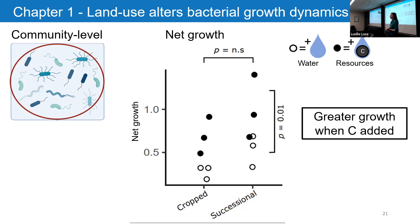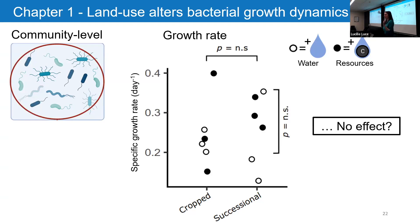I also looked at net growth. Unsurprisingly, when you add carbon to a microbial community and give them more food, they grow more — which is encouraging to see. But I didn't see any effect of land use on this metric. When I looked at growth rate, the data is all over the place with no clear effects — and that's confusing.